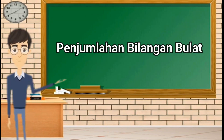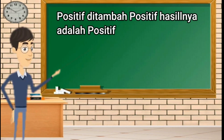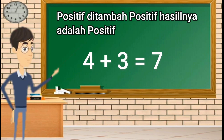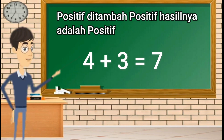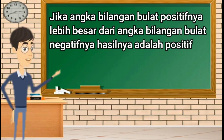Penjumlahan bilangan bulat: positif ditambah positif hasilnya positif. Contoh: 4 ditambah 3 sama dengan 7, karena 4 dan 3 merupakan positif dan hasilnya juga positif. Jika angka bilangan bulat positifnya lebih besar dari angka bilangan bulat negatifnya, hasilnya adalah positif.